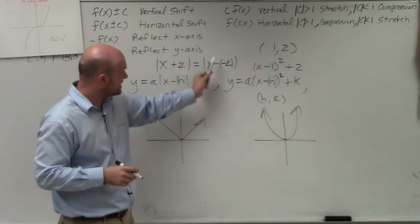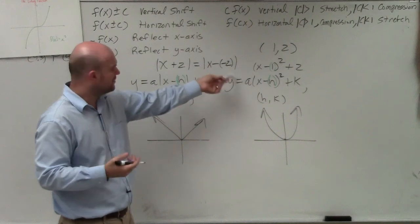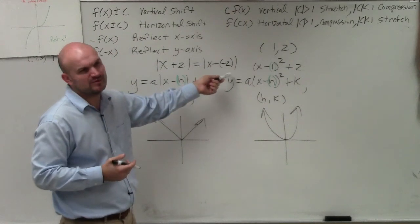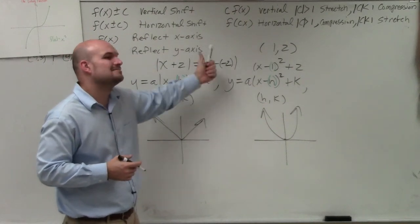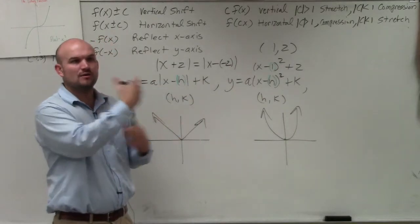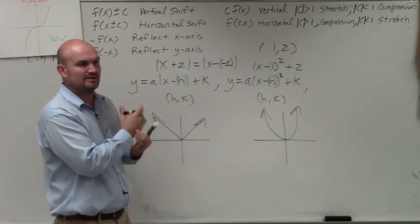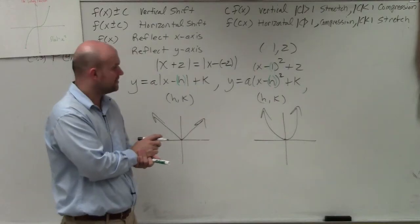That's x minus h. x minus h, where h is negative 2. But we don't write things as x minus a negative number. We simplify that to x plus h. That's why it's always the opposite way that it's written, because it's being simplified in our format. OK?